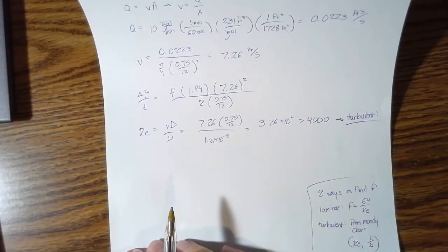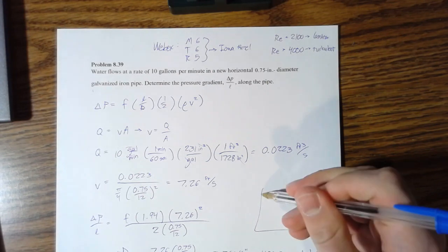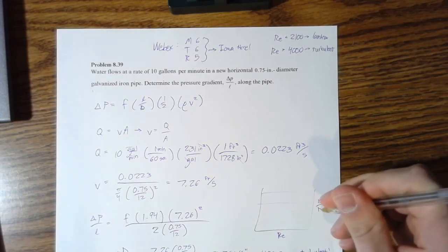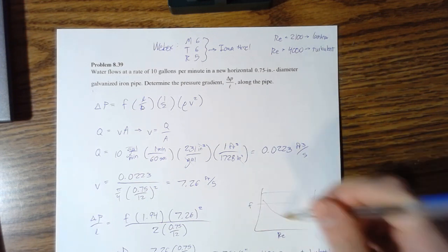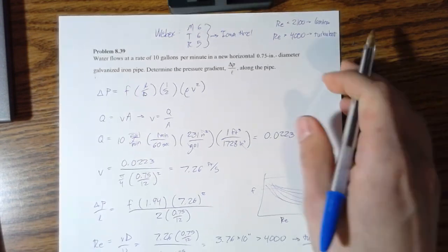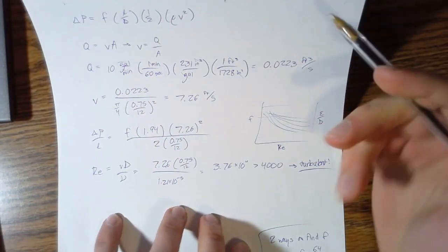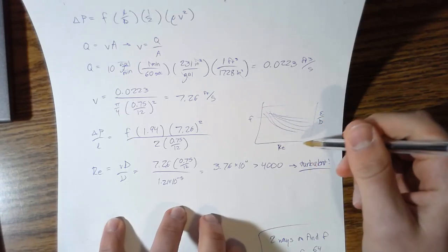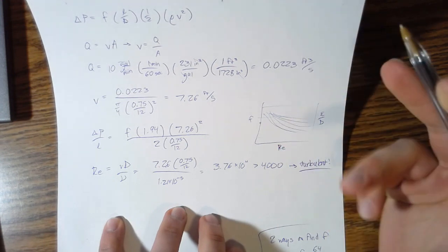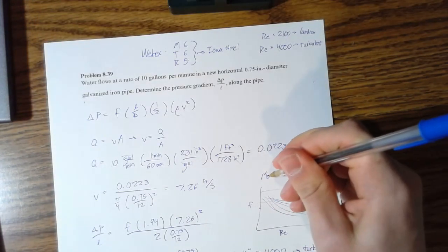And so you'll look at your Moody chart, which again if you're not familiar with that just yet, you have this chart: Reynolds number over here, epsilon over D, friction, then you have a bunch of lines. And what you'll do is look at what line you're supposed to look at, and then you find the function of Reynolds number and epsilon over D, trace over, and then you get your f.